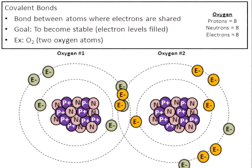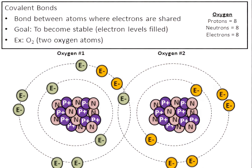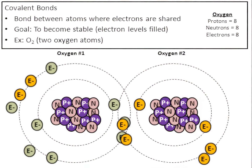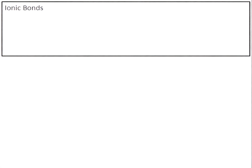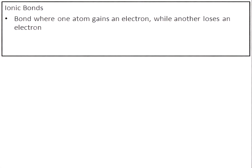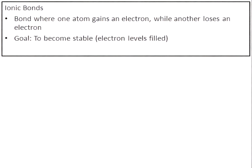Let's look at an ionic bond next. The definition of an ionic bond: it's a bond where one atom gains an electron and another loses. Remember, atoms make bonds in order to become stable — they're trying to fill their levels of electrons.